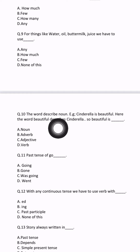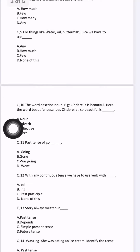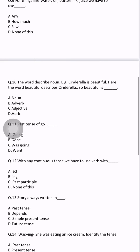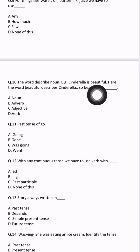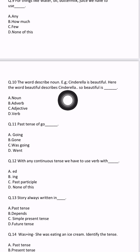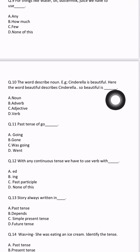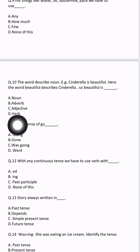Question number 10: the word describes noun. If there is a word that tells about a noun — suppose 'Cinderella is beautiful.' The word beautiful indicates about Cinderella. The word beautiful describes Cinderella. So beautiful is blank — if a word describes a noun, what is that word? Adjective.